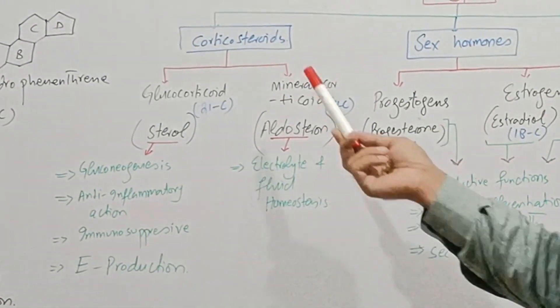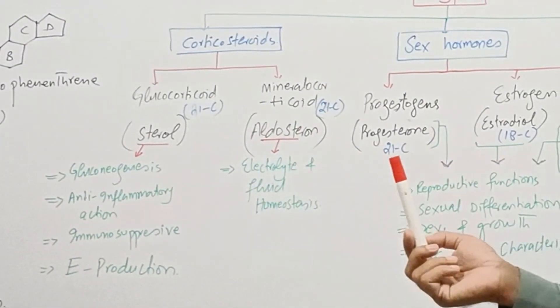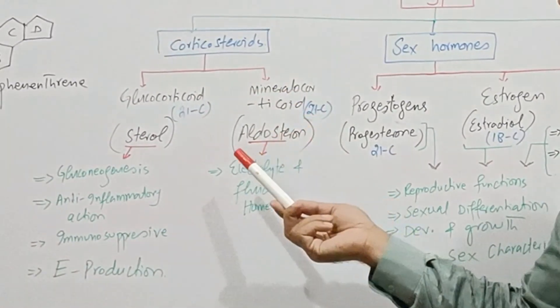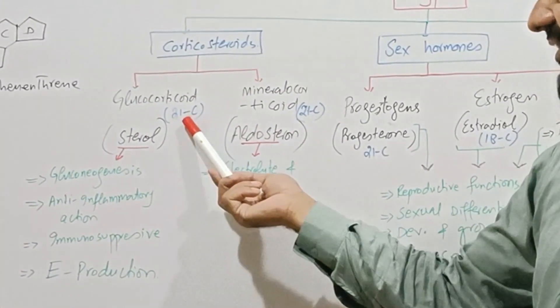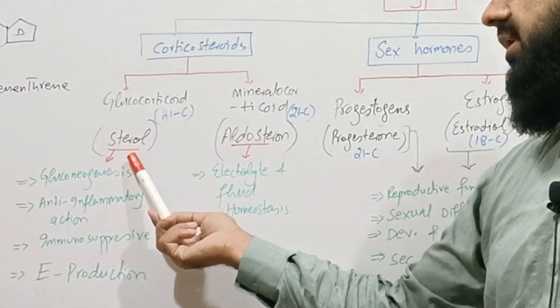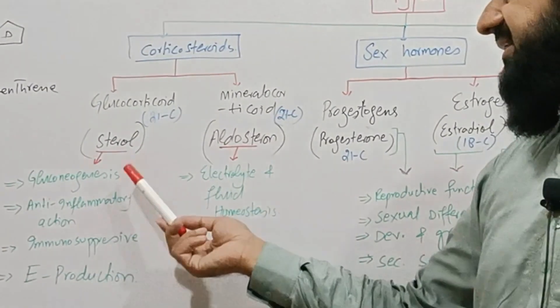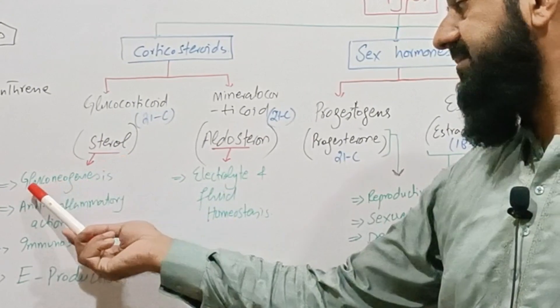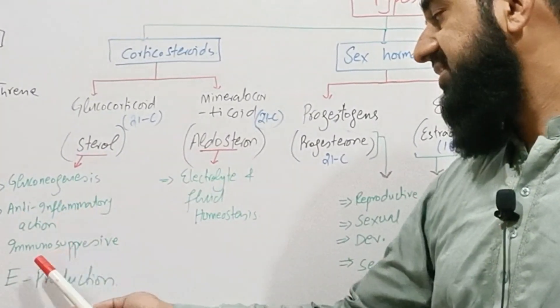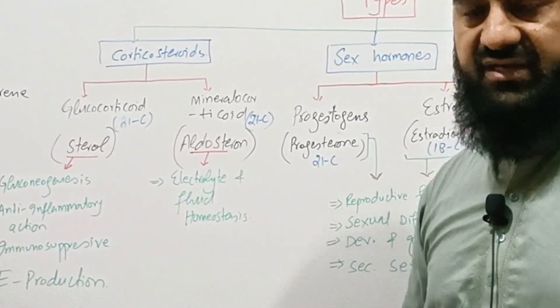First of all, let's see corticosteroids. They are secreted from adrenal cortex glands and these are of two types: glucocorticoid and mineralocorticoid. Glucocorticoids contain 21 carbons and the example of this steroid is cortisol. These steroids are very important because they are involved in the production of glucose through the pathway gluconeogenesis. These have anti-inflammatory action, are immunosuppressive, and involve in energy production.